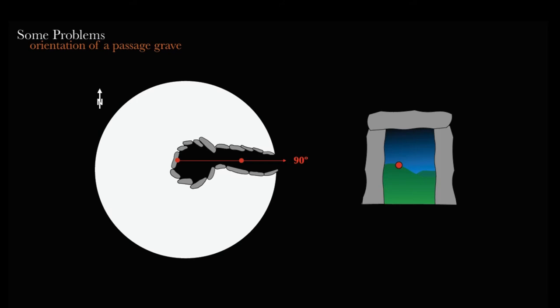But I can define orientation in a completely different way. I could have measured the midpoint of the entrance of the corridor and the midpoint of the entrance of the chamber, and get 93 degrees—three degrees off from the previous measurement, pointing to a completely different part of the horizon.